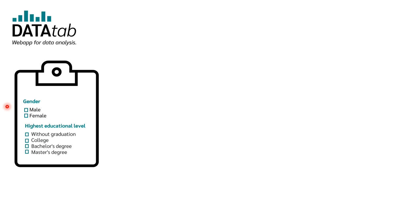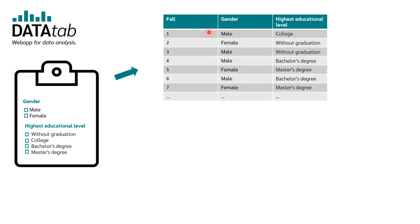Imagine we want to investigate if there is a relationship between gender and highest educational level. For this purpose, we simply do a small survey where we ask people what their gender is, and what their highest educational level is. This questionnaire we send randomly to people, and all of them answer these two questions. The outcome is a table where each row is one case — for example, the first person is male with highest educational level of college, and the second person is female without graduation.